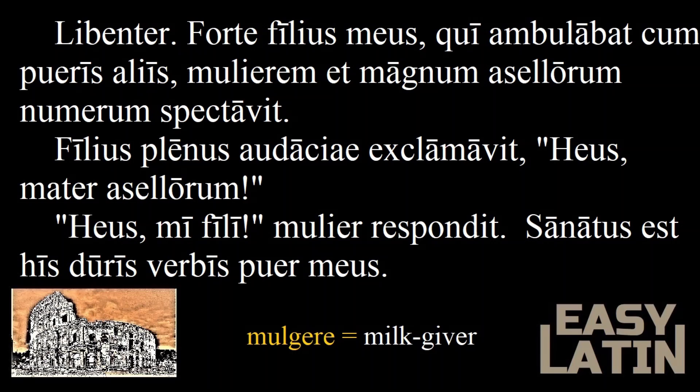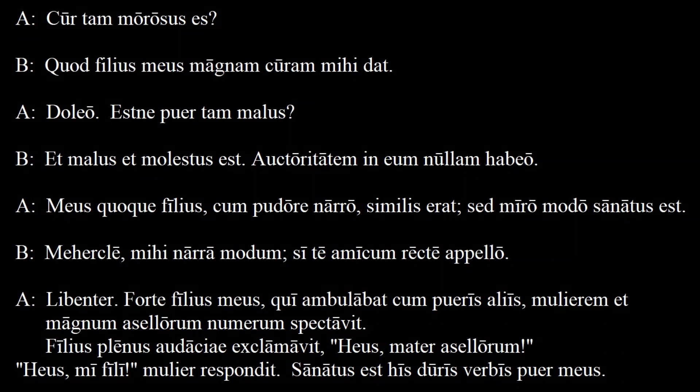Okay, see if you understand everything now as we go through the dialogue once more. Cur tam morosus es, quod filius meus magnum curam mihi dat. Doleo, est ne puer tam malus? Et malus et molestus est, auctoritatem in eum nullam habeo. Meus quoque filius, cum pudore narro, similis erat, sed miro modo sanatus est. Mehecle, mihi narra modum, si te amicum recte appello. Libenter, forte filius meus, qui ambulabat cum pueris aliis, mulierem et magnum asellorum numerum spectavit. Filius plenus audaciae exclamavit: Heius, mater asellorum. Heius mi fili, mulier respondit. Sanatus est his duris verbis puer meus.